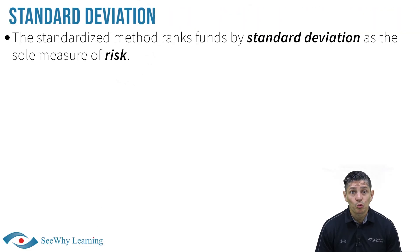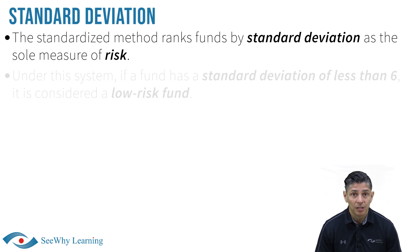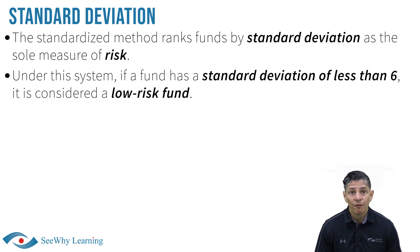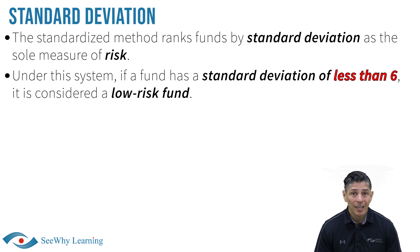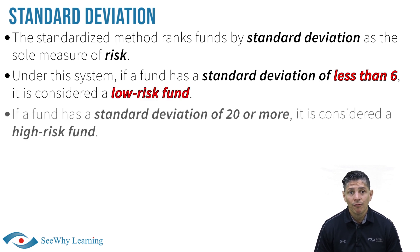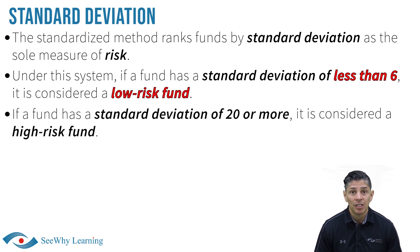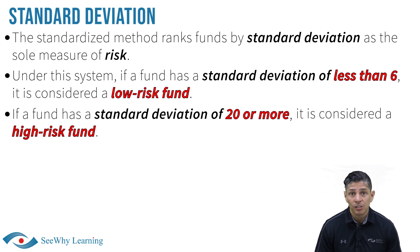The standardized method ranks funds by standard deviation as the sole measure of risk. Under this system, if a fund has a standard deviation of less than 6, it is considered a low risk fund. On the other hand, if a fund has a standard deviation of 20 or more, it's considered a high risk fund.